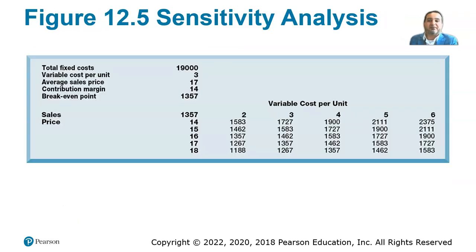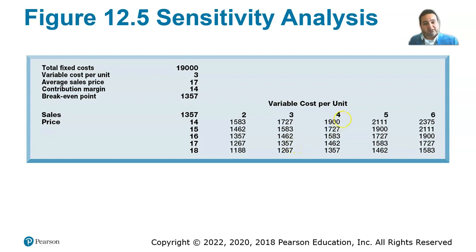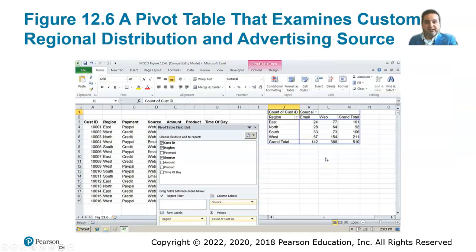Here is a sensitivity analysis example: when the cost per unit is $3 and the sales price is $7, the break-even comes out to 1,357 units. This shows how our sales would change if the cost per unit or the sales price increased or decreased.